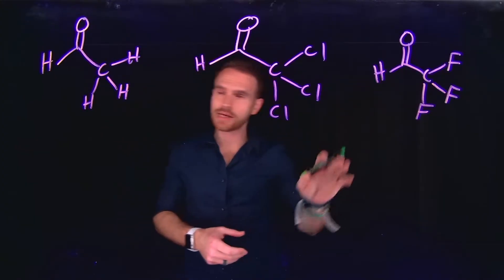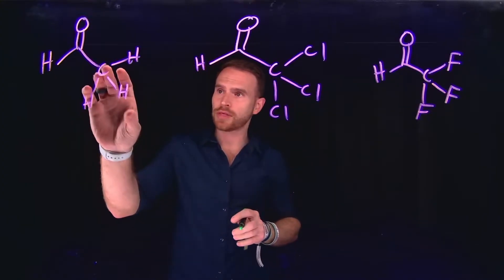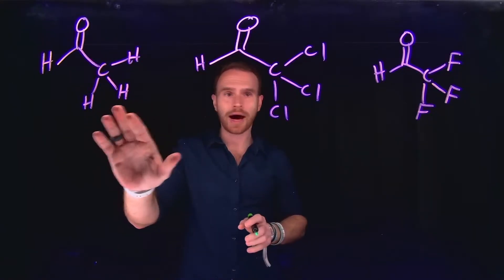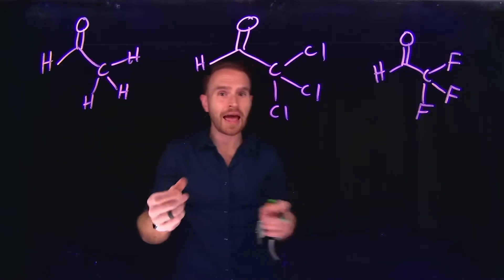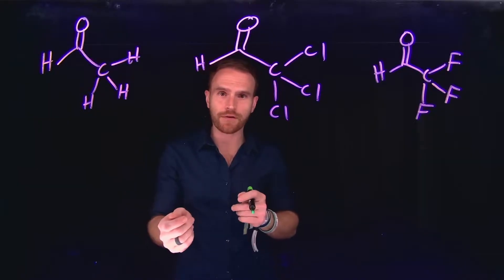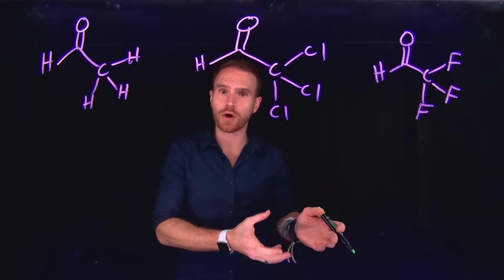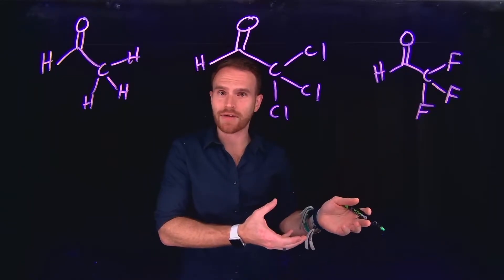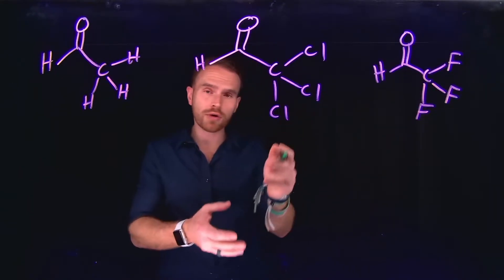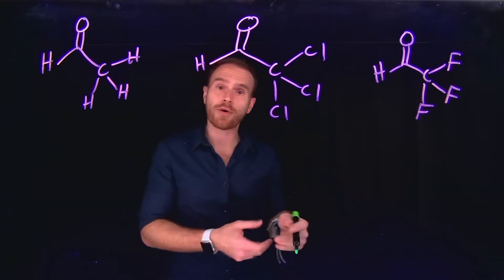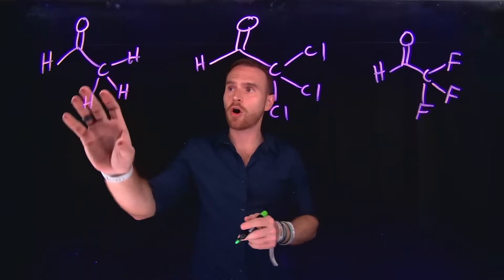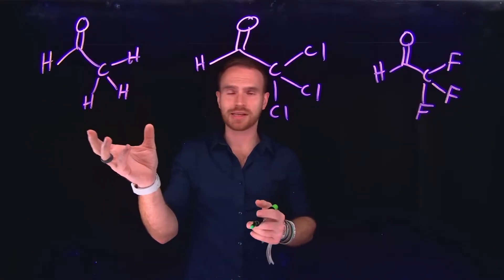The rate at which nucleophiles will attack carbonyl carbons is greatly affected by the substituents on neighboring carbon atoms. So on the screen, I have three different aldehydes, each with a carbon chain that contains different substituents on them: hydrogens, chlorines, and fluorines. And we need to think about the inductive effects that having these different substituents will have. Remember that fluorine is one of the most electronegative atoms on the periodic table. Chlorine is also electronegative. However, not nearly as electronegative as fluorine. And hydrogen is almost the exact same electronegativity as carbon. Therefore, this is not going to be a very polar bond.